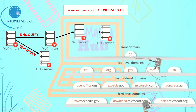The domain hierarchy of this recursive searching works as follows: we have a root domain — the dot extension. If the DNS record is not found there, it will go down to the top-level domain, such as .edu, .org, .gov, or .com. In our case, the URL is www.amazon.com, so since it's a .com extension, we select the .com top-level domain.